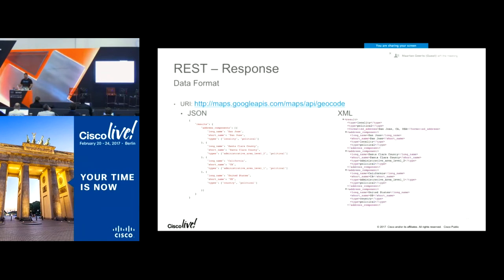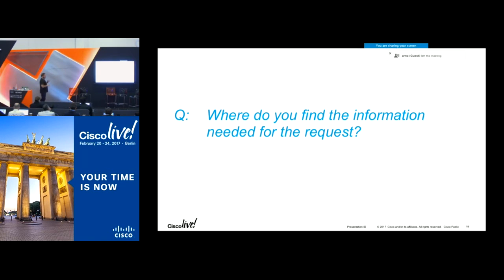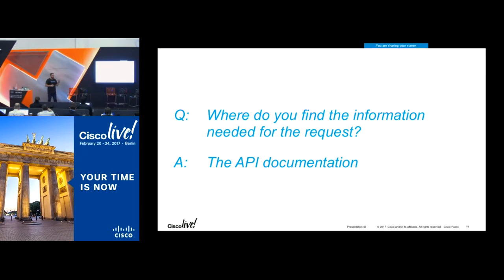So we talked about generic ideas about what REST APIs are, the anatomy of them, and the data formats that can come back. But now we need to talk about where you find the information needed for that request — how did I know how to format that Google Maps API URL? And I'm sure you guys are going to figure it out — that's the documentation. I cannot stress enough: the API documentation is the most important thing. I've worked with APIs that are well-documented and APIs that are not, and the difference in time spent is very clear. If the documentation is good, you should be able to use a REST API in a matter of minutes.